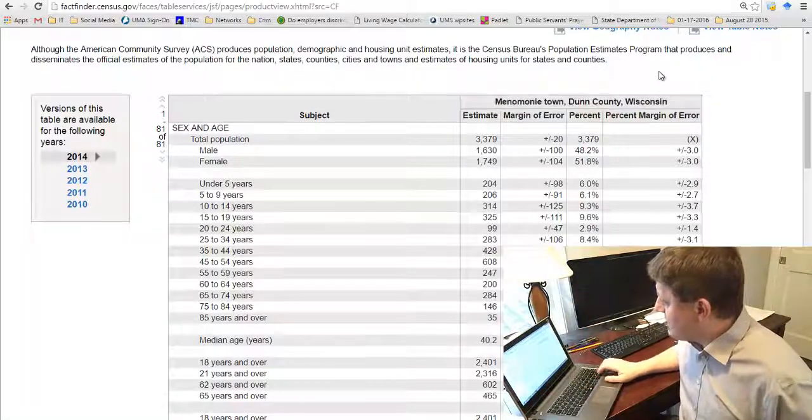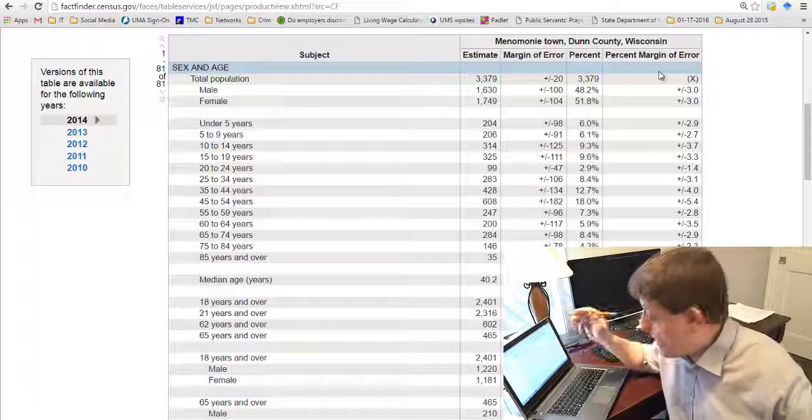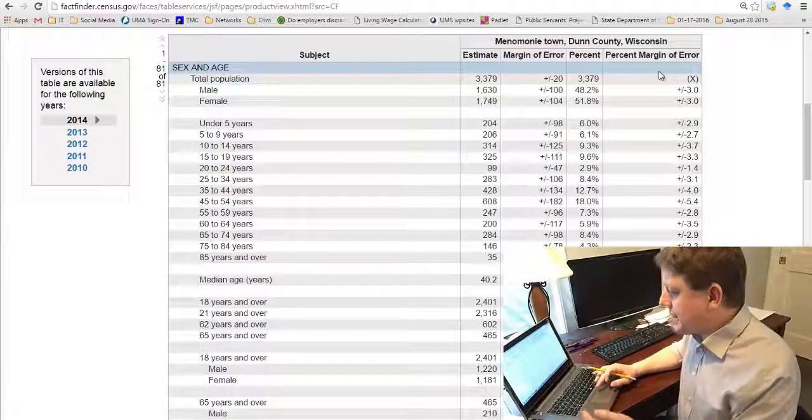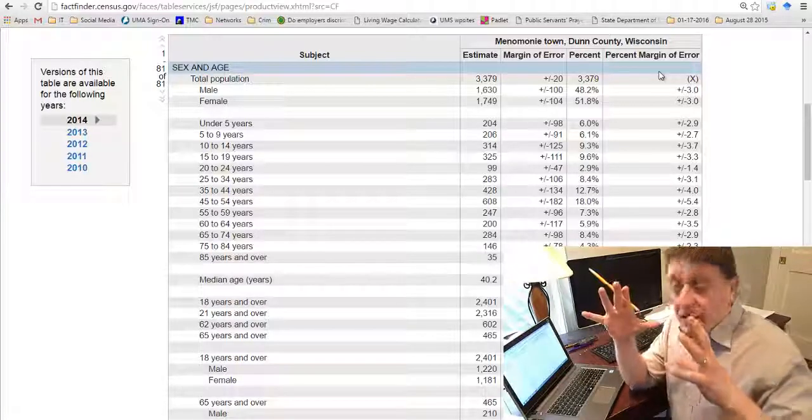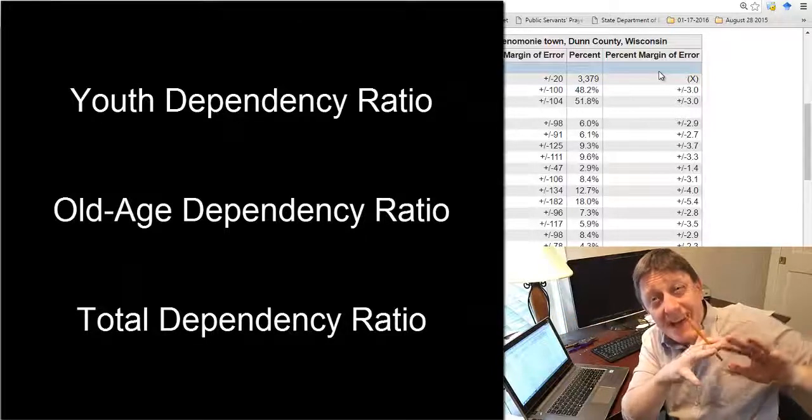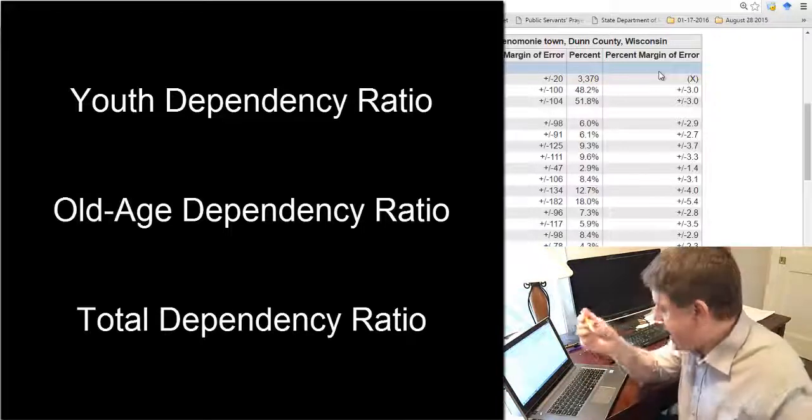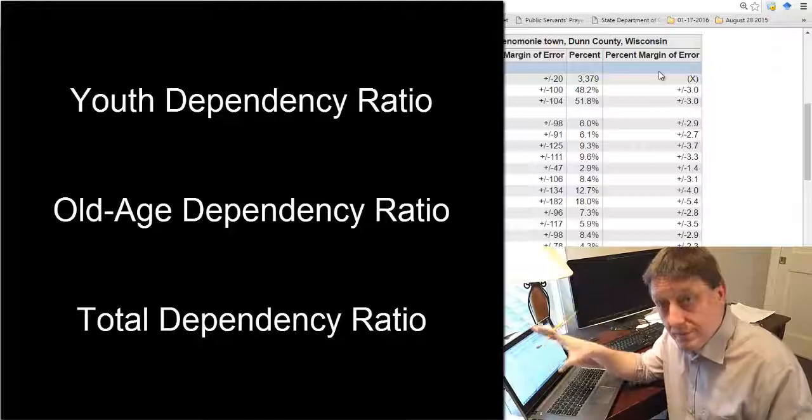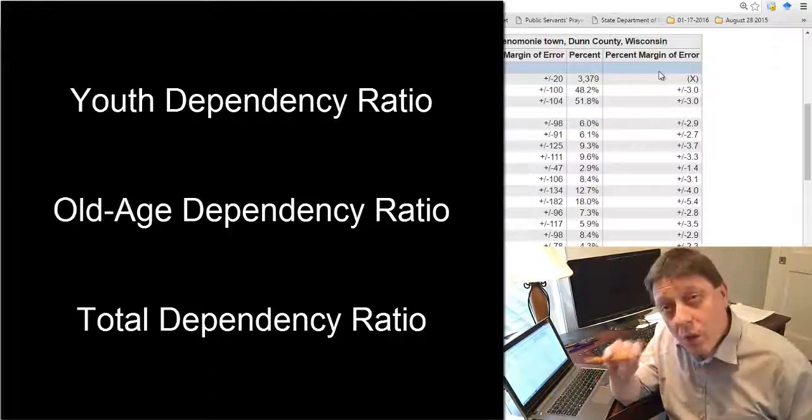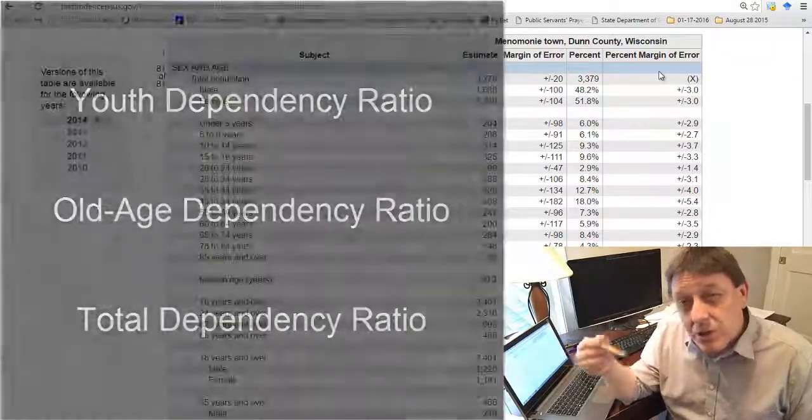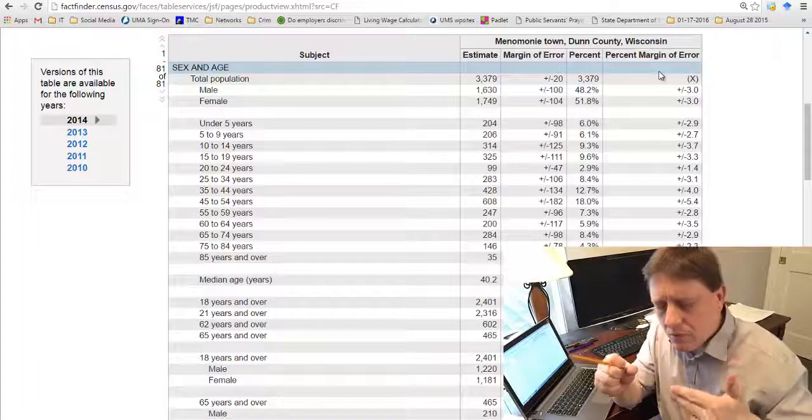Now the next thing we need to do is we need to calculate some dependency ratios. But what are dependency ratios and why would we want to calculate them? Well to think about what dependency ratios are we really just need to think of a few equations. There's a youth dependency ratio, there's an old age dependency ratio, and a total dependency ratio. And all of these dependency ratios are trying to establish one thing, and that is how many people who according to demographers are likely to be dependent on others are there for every person who is of working age. That is who, at least if we think about what working ages are, could be in the set of those who are working. So who are the two sets in terms of age of individuals who might be thought of as dependent? Well the first is youth.